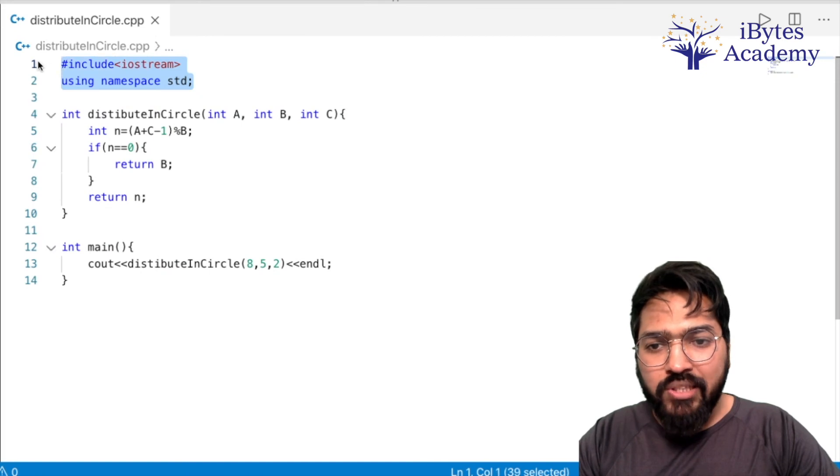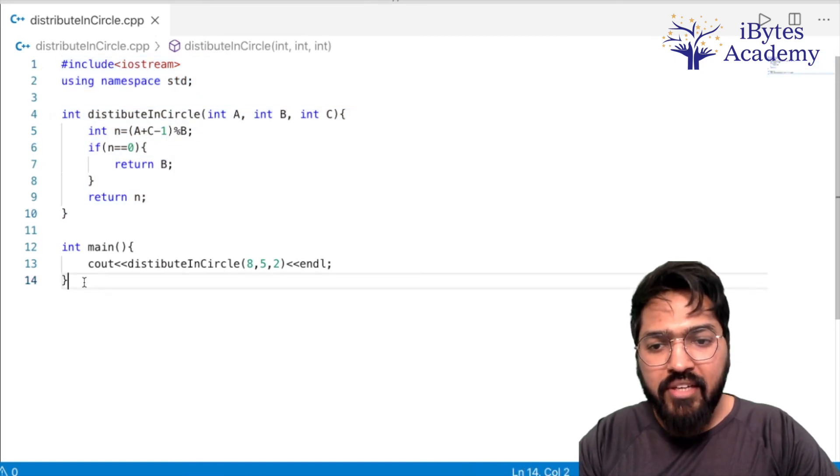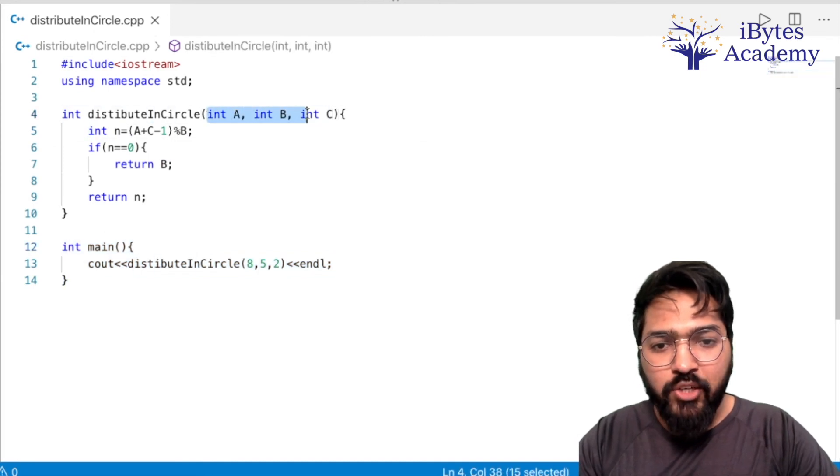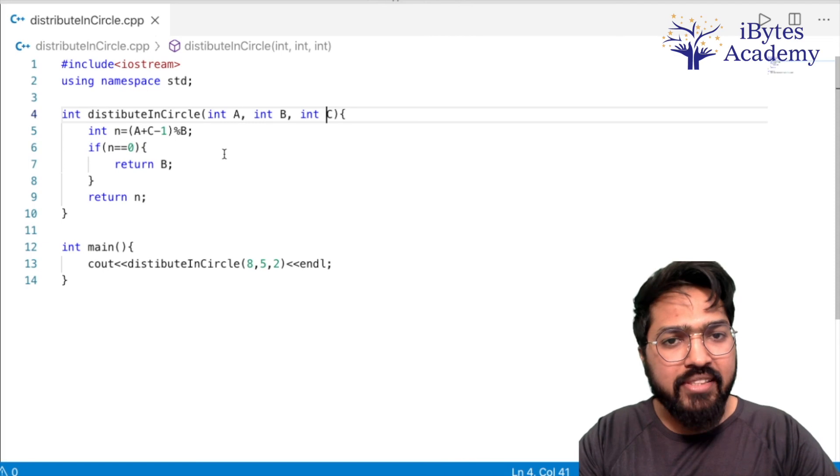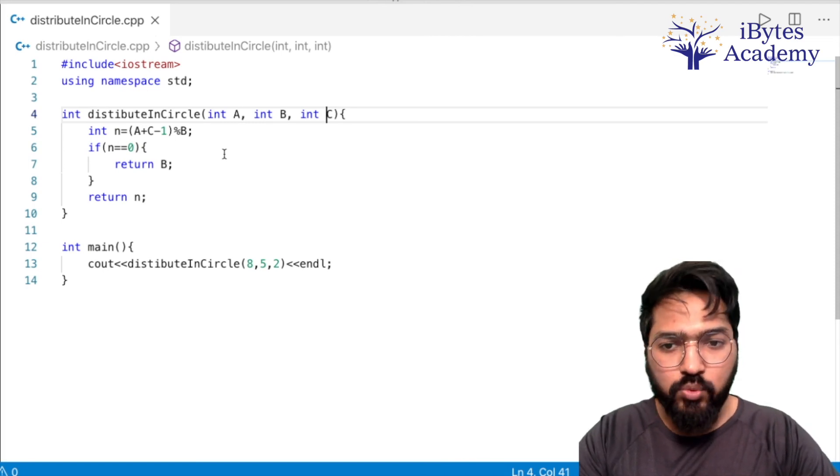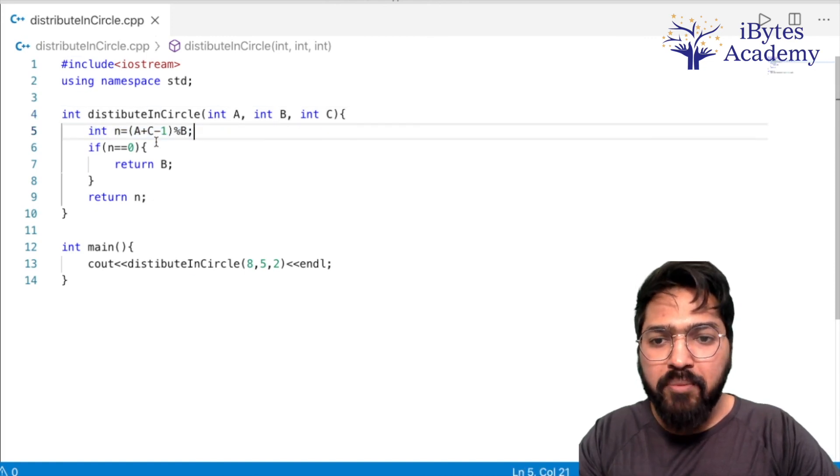So this is include iostream using namespace standard. Yeh hamara function hai distributeInCircle and yeh hamara main function hai. To hamare is function ko teen values mil rahi hongi: A, B, and C, where A is number of chocolates, B is number of students, and C is the starting position.